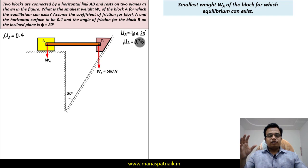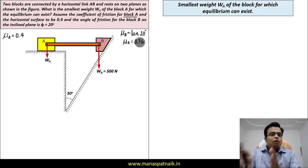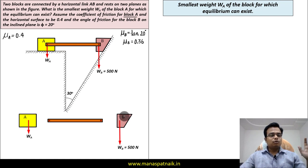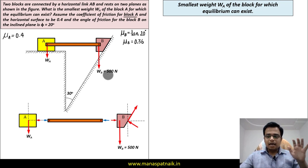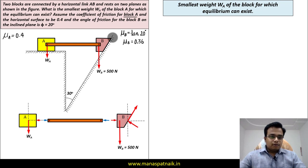To find the value of W_A, we need to draw a free body diagram of all three elements: block A, rod AB, and block B. Let's free all three bodies from each other. Now let me analyze all the forces acting on block B. Since block B has a natural tendency to move down the plane, friction acts up the plane — that is the frictional force direction.